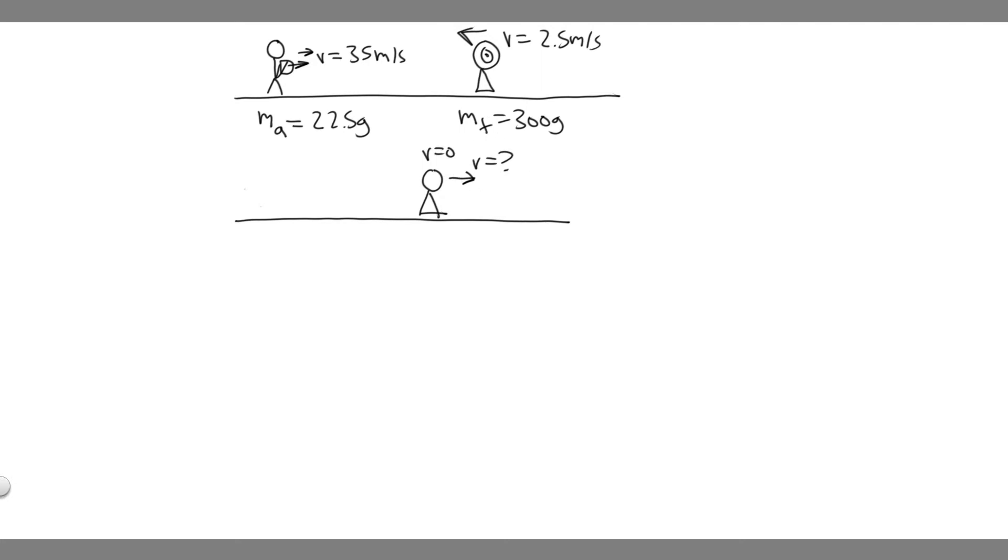The way we're going to do it is by using the laws of conservation of momentum which basically tells us the momentum of two objects before has to be equal to the momentum after. We know momentum equals mv.